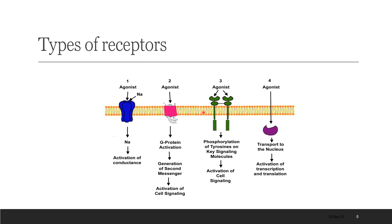The third type of transmembrane receptor has two categories. In one, the receptor has intrinsic enzymatic activity — the receptor has two domains, and when a drug binds, dimerization occurs, bringing the two complexes together, followed by enzymatic activation and cell signaling. This type is further divided into two subtypes, which we'll discuss in detail in the upcoming lecture.